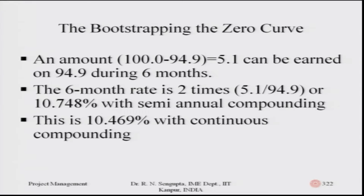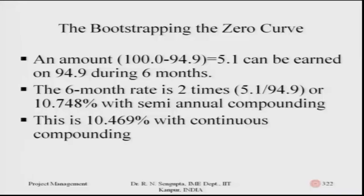An amount of 5.1, which is the difference from 194.9, can be earned on a value of 94.9. So the ratio of interest rate is 5.1 divided by 94.9. Since there are two payments happening in one year, the answer is not annual — the six-month rate is twice 5.1 divided by 94.9, which comes out to be 10.47748.